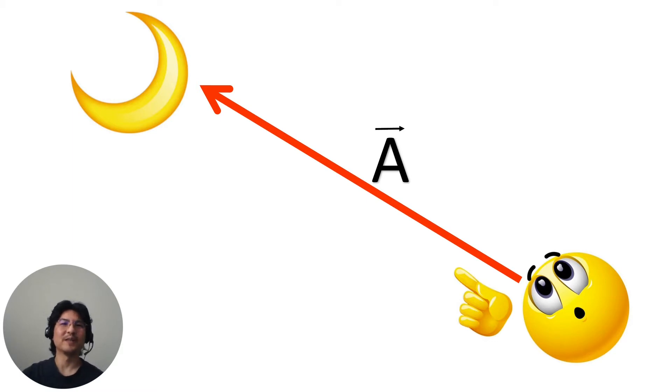So vectors are how we're going to describe physical quantities, for example the position of the moon, and you just draw it like an arrow like this, and we'll call this vector A. And to denote that it's a vector, you draw a little arrow over top of it.